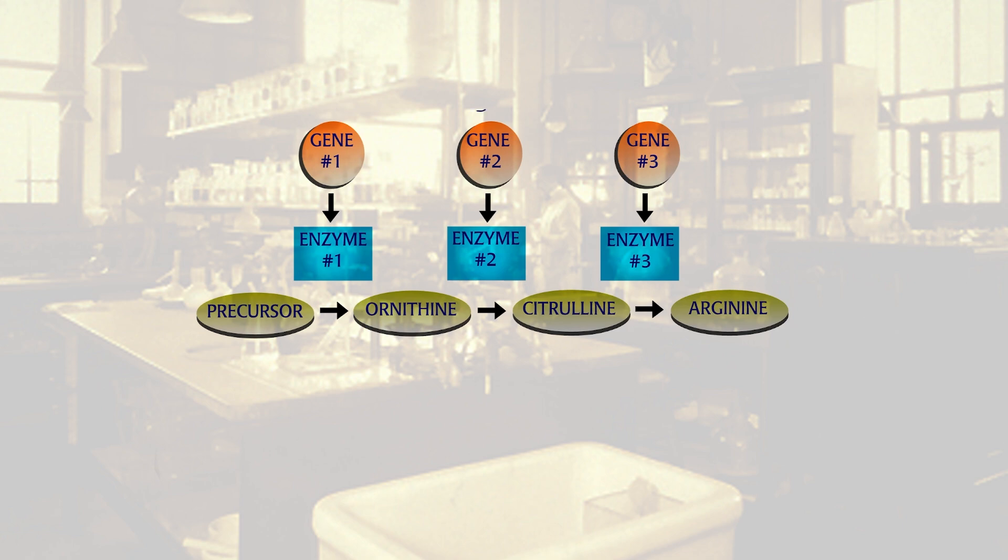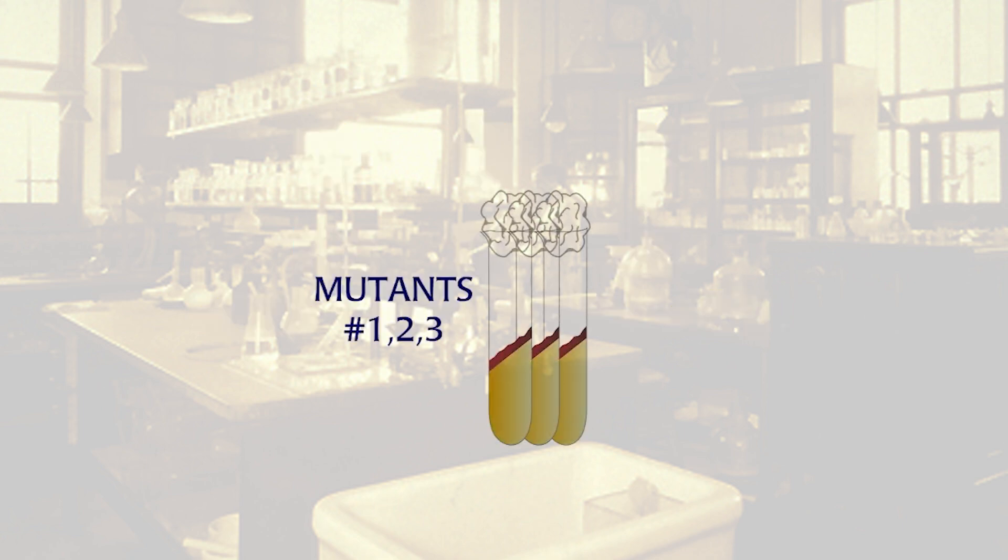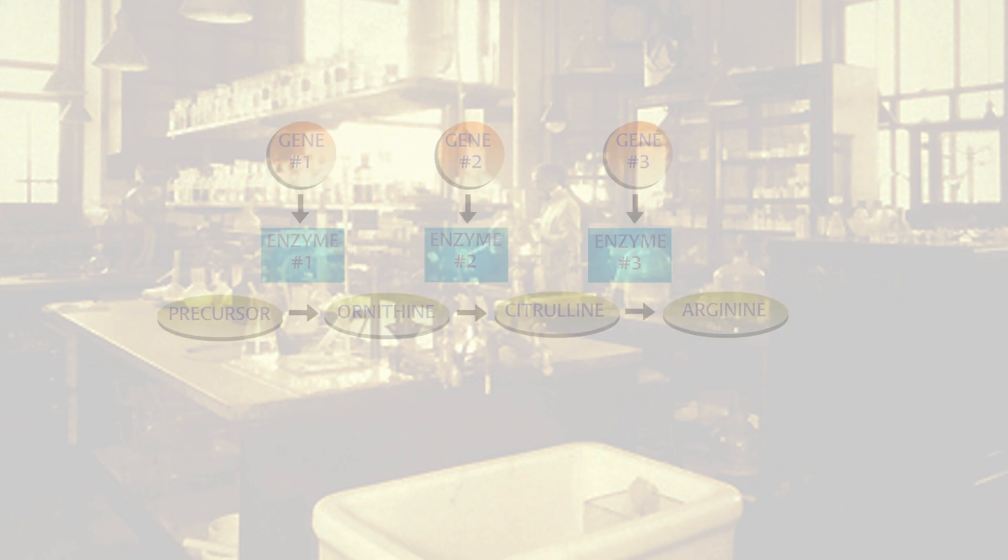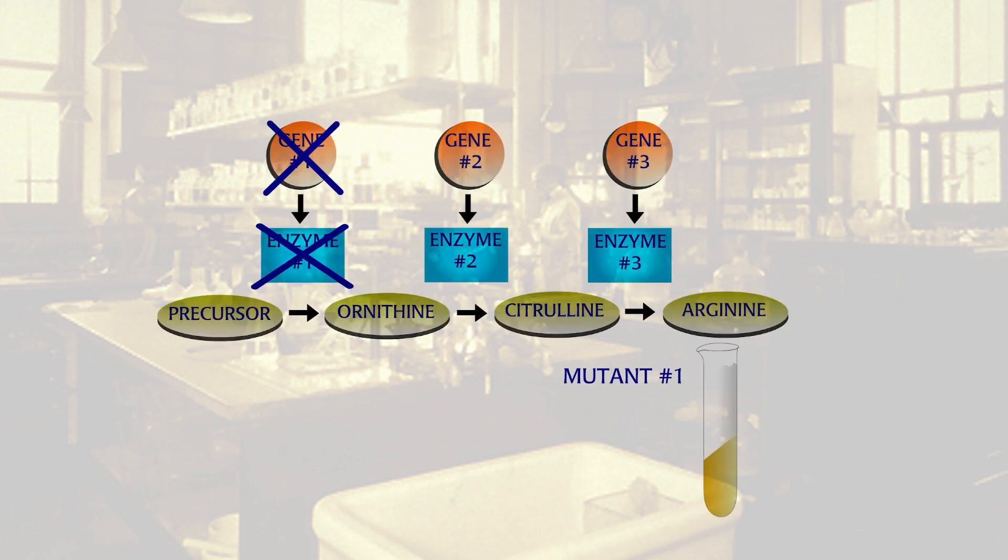In 1944, their colleagues Adrian SRB and Norman Horowitz found these mutant strains. They started with Neurospora strains that needed arginine as a supplement. These strains had mutations in different genes.